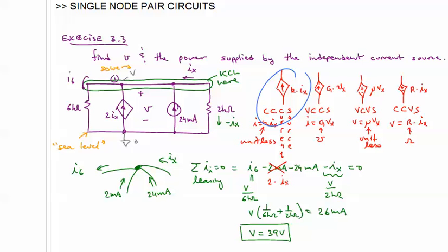Now, what is IX? IX, as you see, is the current that's flowing up through the 2K resistor. Did we write what IX was? Minus IX. Let's go ahead and write this. Minus IX.